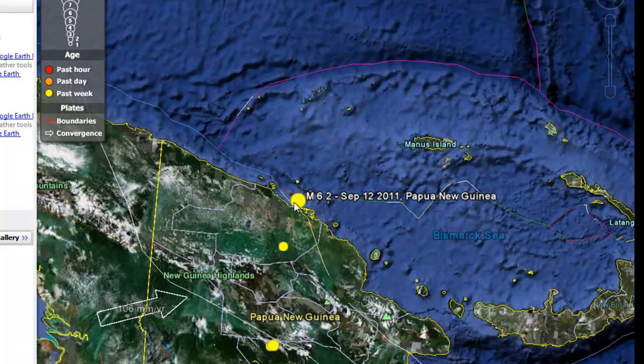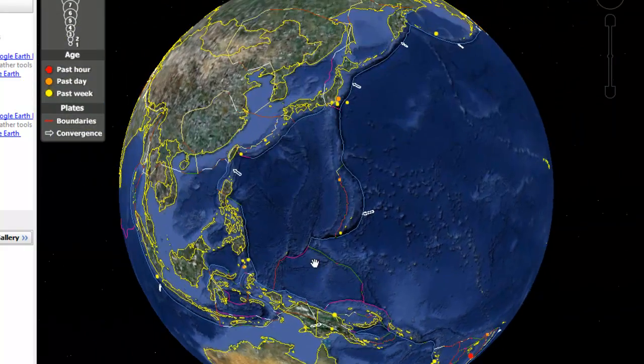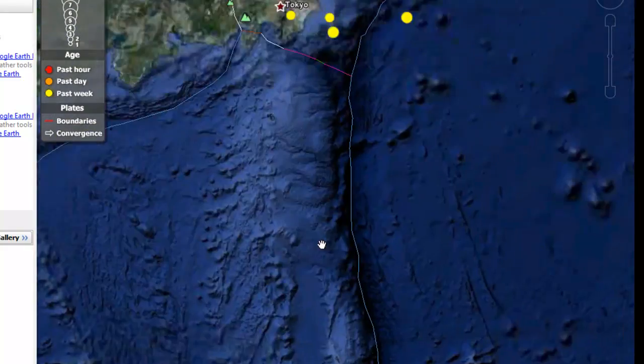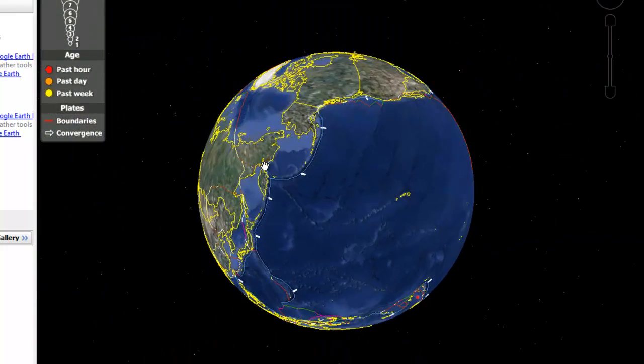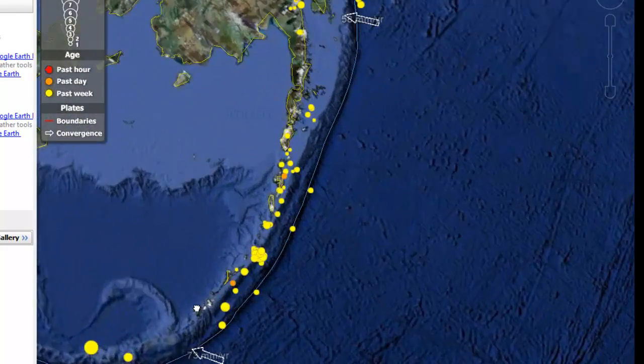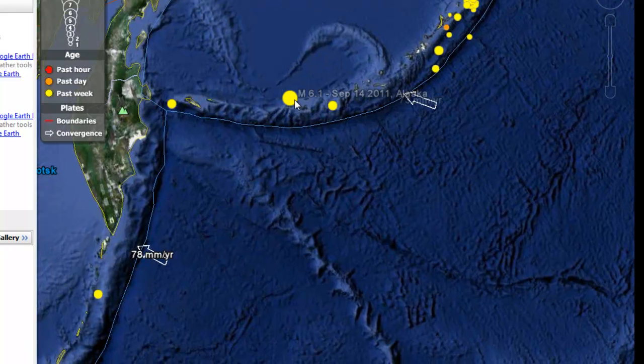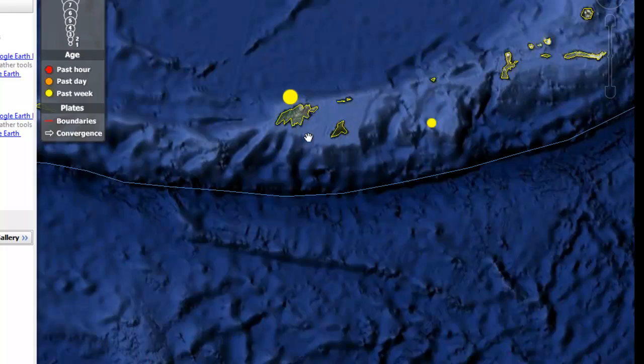And then up here, right here is that 6.2 right on the shelf. Oh, there we go, shelf, that's what I couldn't think of over there, right on the edge of the shelf there. And then the one that was up here near Russia, 6.1 is what it was, and again it was right on the edge of the shelf.